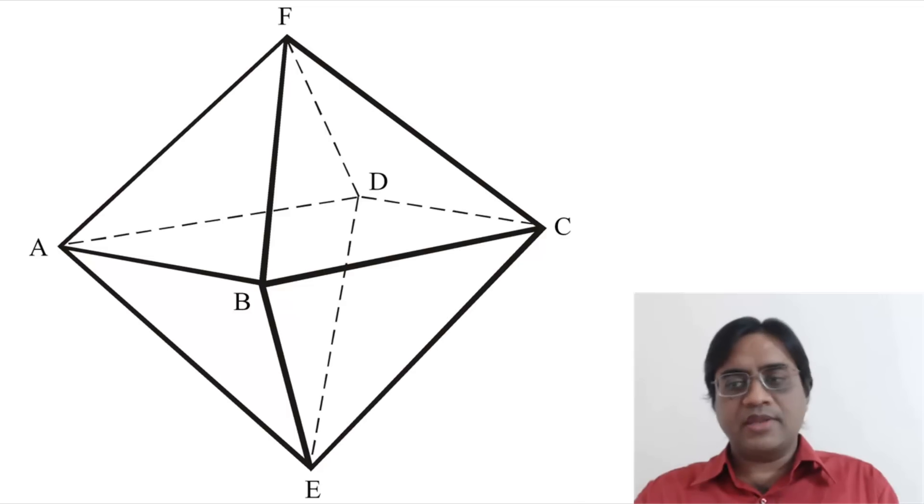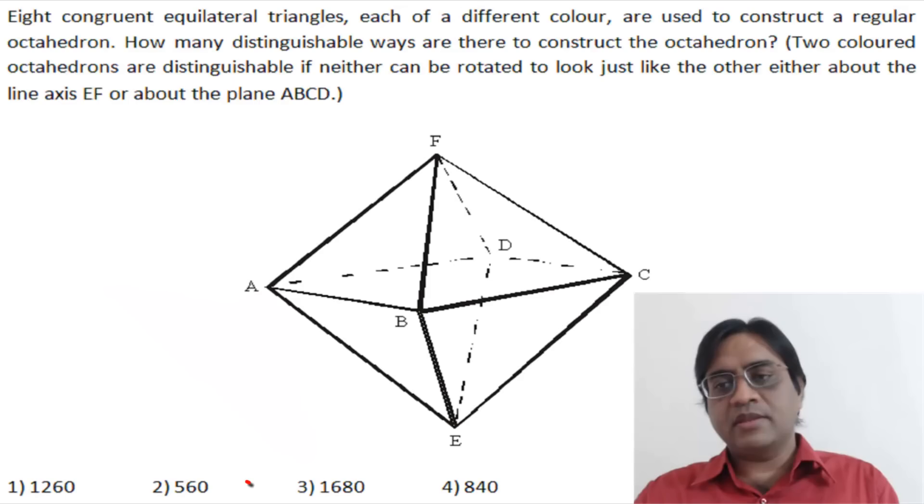So, 7 factorial must be divided by 3 to get the total number of permutations, and hence the third option should be the correct answer.